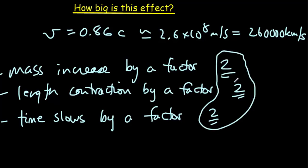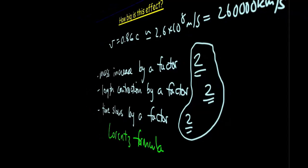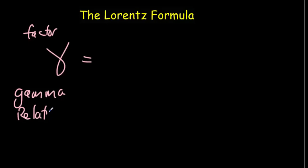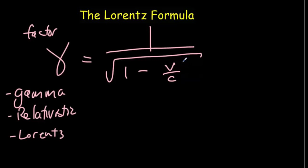Of course, we're going to want to have a formula that's going to generate that factor for different fractions of the speed of light. And that formula is called the Lorentz formula. So let's write down the Lorentz formula. It starts with this gamma here, and that's the factor that we've been talking about. It's sometimes called the gamma factor because this is the Greek letter gamma. It's also called the relativistic factor or the Lorentz factor. On the other side of the equation, it's one over the square root of one minus the fraction, v over c squared.